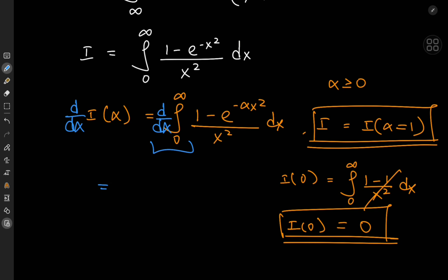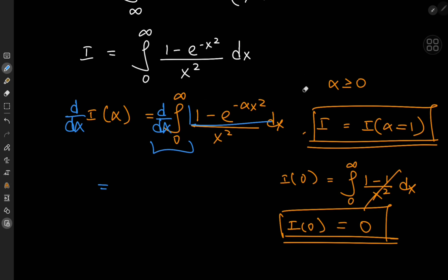We know it converges by Dirichlet's test, because in the numerator we have the term 1 − e^(−αx²), which is 1 minus a damped exponential function. That term is bounded, and this bounded function is multiplied by 1/x², which is a decreasing function on this interval. So by Dirichlet's test we have a convergent integral function. We switch the order and now have the integral from 0 to infinity.